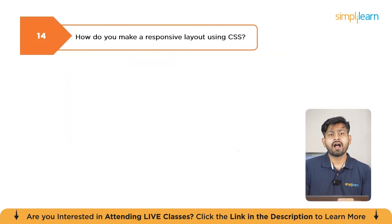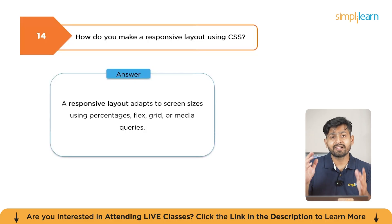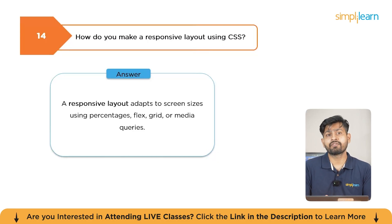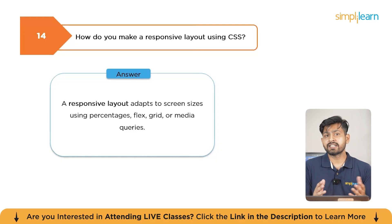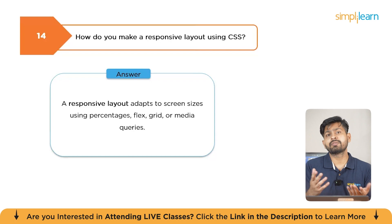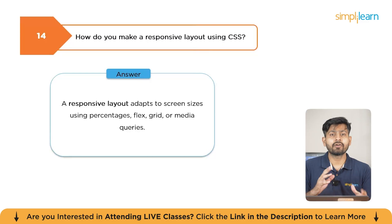How do you make a responsive layout in CSS? A responsive layout adapts to different screen sizes using media queries. You can use flexible units like VW, VH, Flexbox, and grid. For example, with @media screen and (max-width: 600px), you can set flex-direction: column to change the layout on smaller screens.